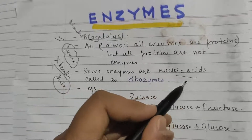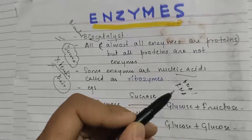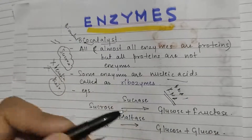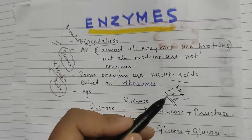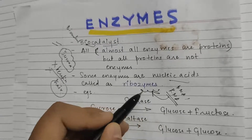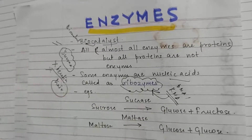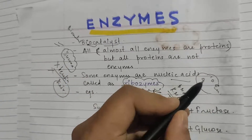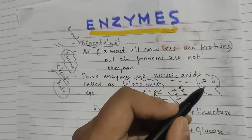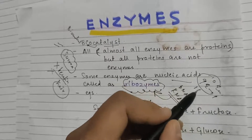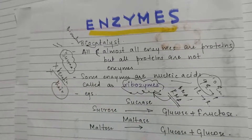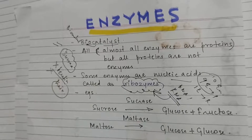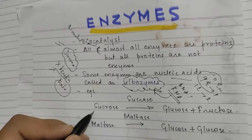Some enzymes are nucleic acids, called ribozymes. Nucleic acids can be either DNA (deoxyribonucleic acid) or RNA (ribonucleic acid). An RNA molecule acting as an enzyme is called a ribozyme. For example, out of 10 enzyme molecules, nine might be proteins and one might be a ribozyme — that is why we say almost all enzymes are proteins.